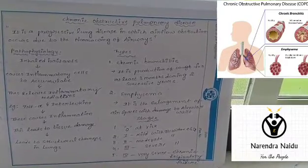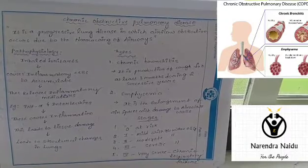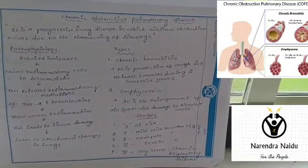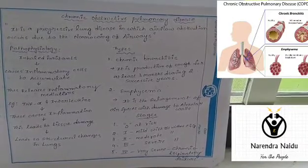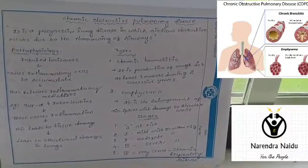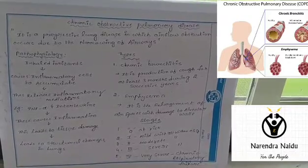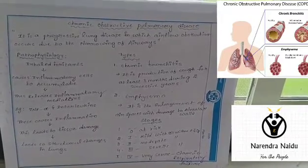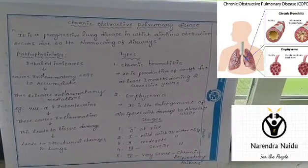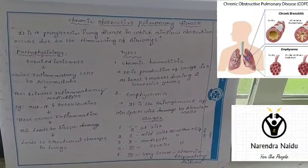There are mainly two types of COPD. The first is chronic bronchitis, which is defined as the production of cough for at least three months during two successive years.